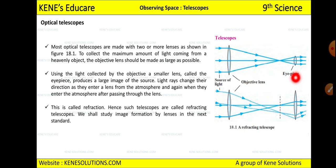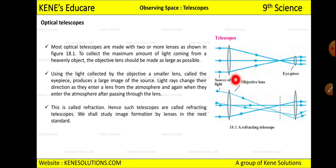To collect the maximum amount of light coming from a heavenly object, the objective lens — which is large — collects that light. The light collected by the objective lens is then passed to a smaller lens called the eyepiece.